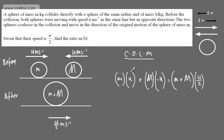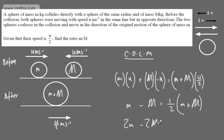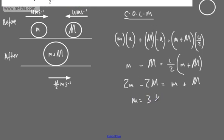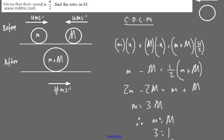This is independent of u, so cancelling u from both sides: m − M = (1/2)(m + M). Multiplying both sides by 2: 2m − 2M = m + M. Subtracting m and adding 2M to both sides gives m = 3M. Therefore the ratio m to M is 3 to 1.